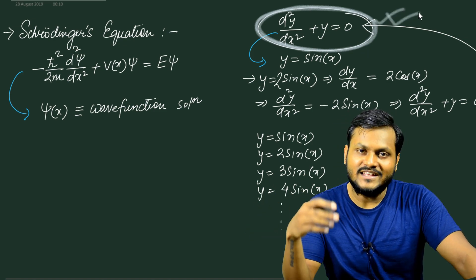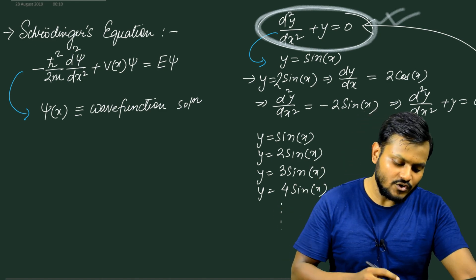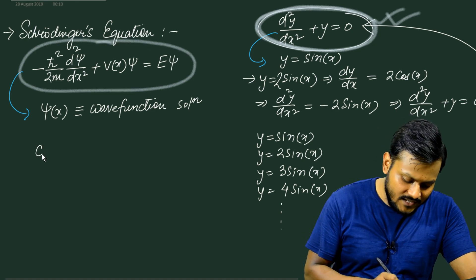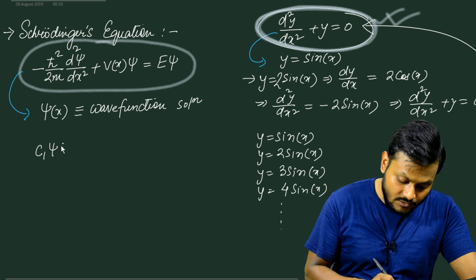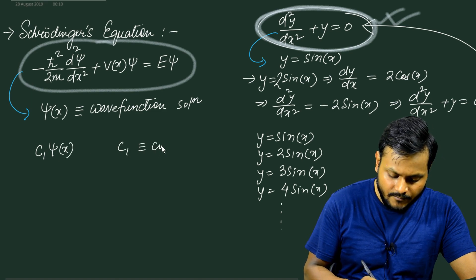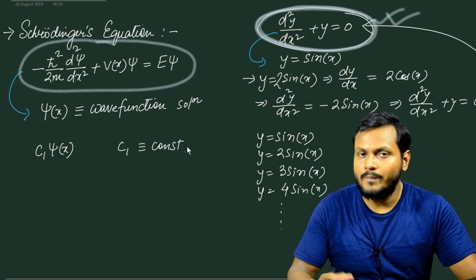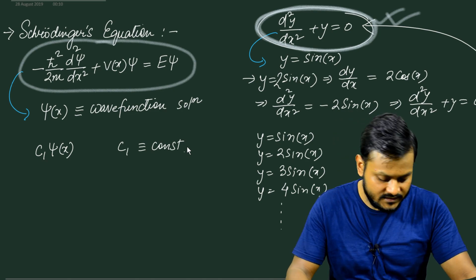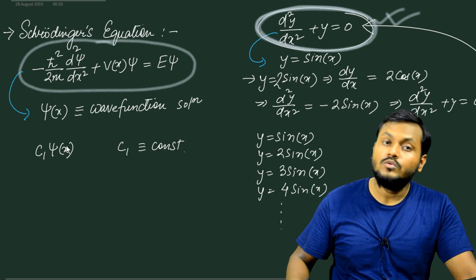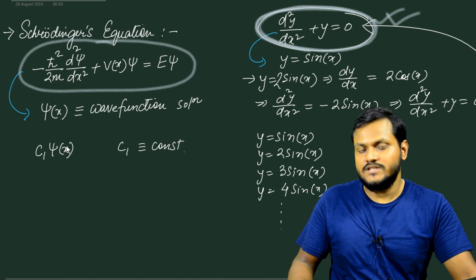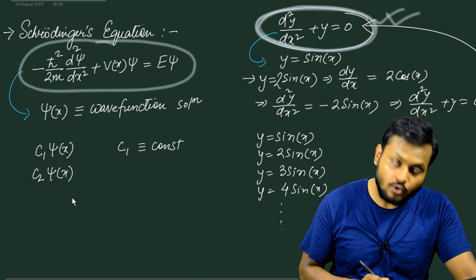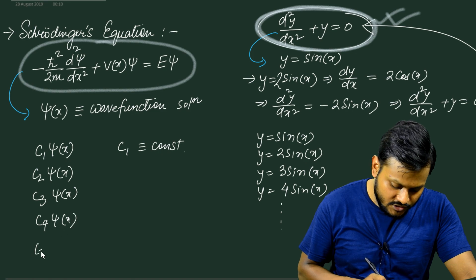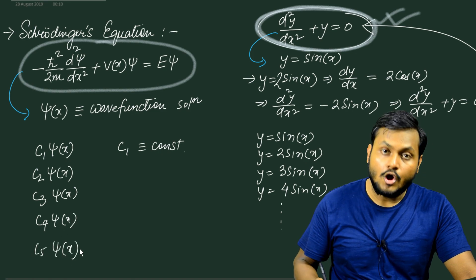In the same way, Schrödinger's equation is a second-order differential equation with solution psi(x). If I multiply psi(x) with a constant c1 — a real constant for the time-independent case, a complex constant for the time-dependent case — this new function is also a solution. Similarly c2·psi(x), c3·psi(x), c4·psi(x), c5·psi(x) are all solutions of the differential equation.